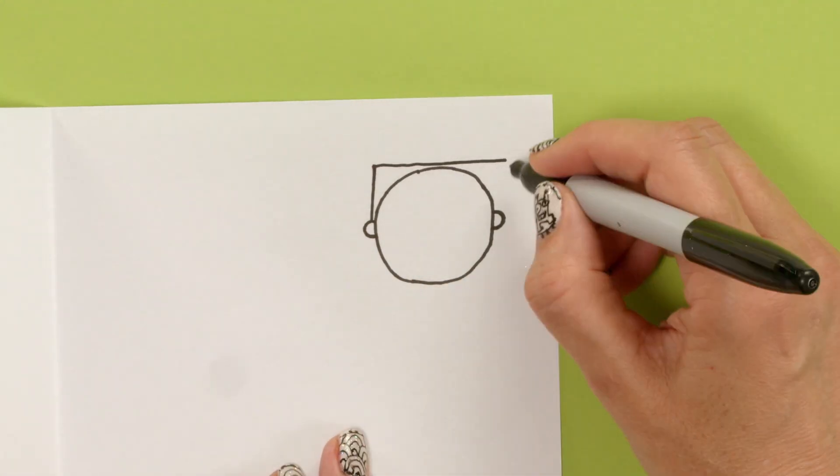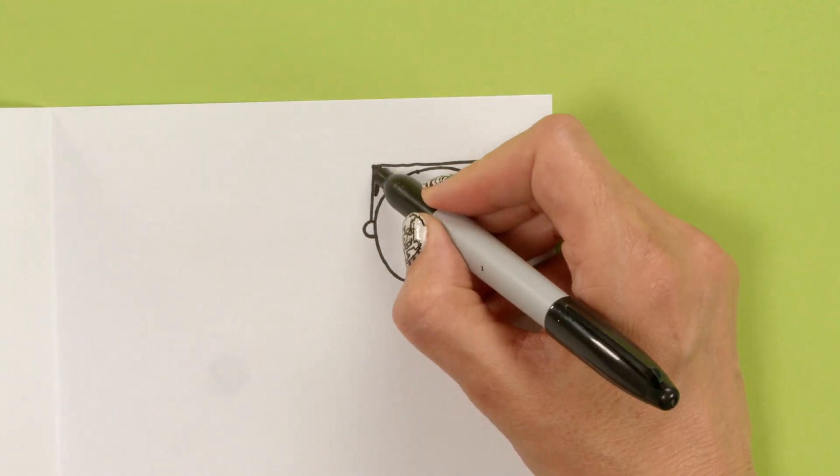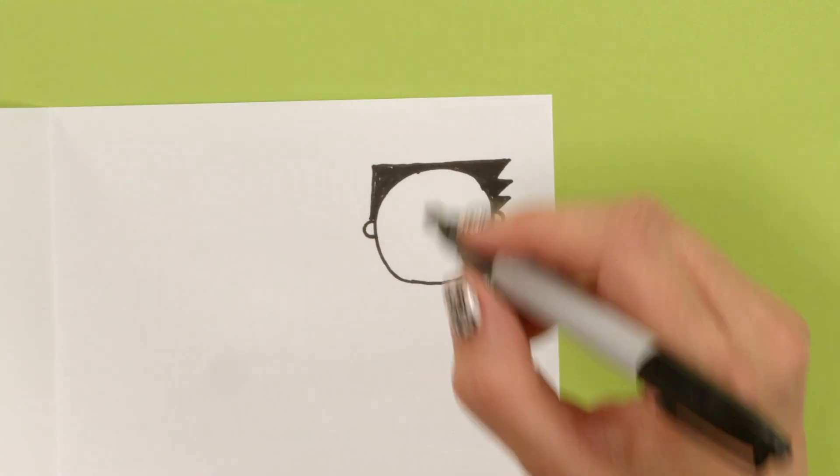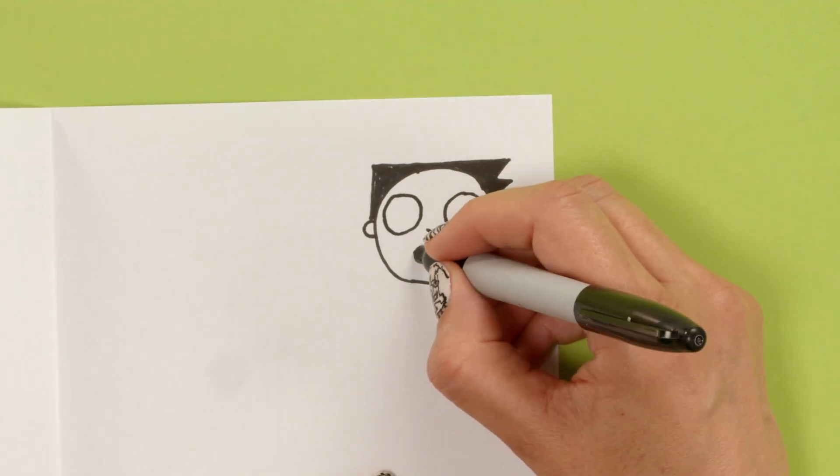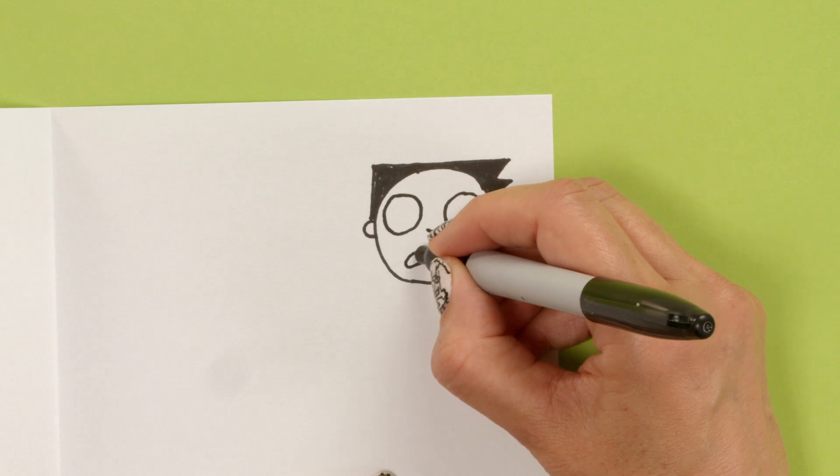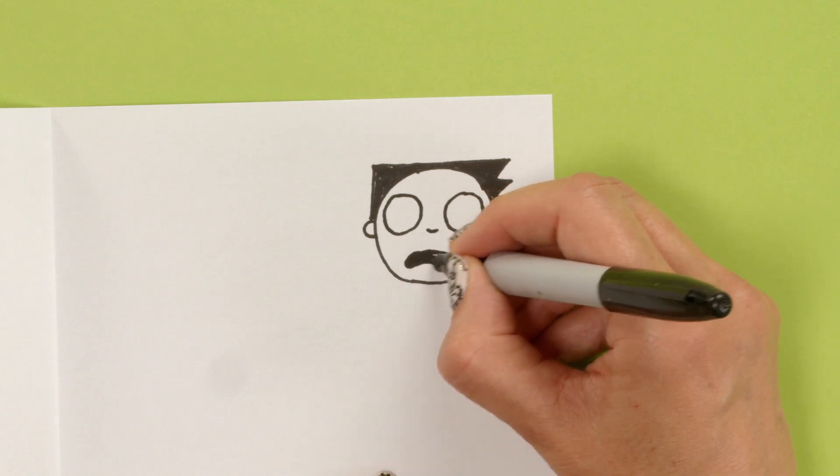I'm using a permanent marker, so be careful with your fingers. Do put something underneath the table if you are using a permanent marker. If you draw a really big expression, that will give you much more of a contrast, and I'll show you next.